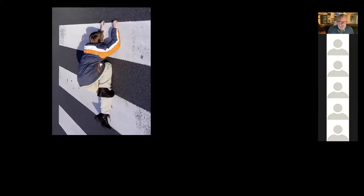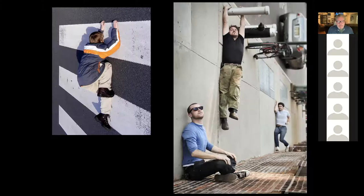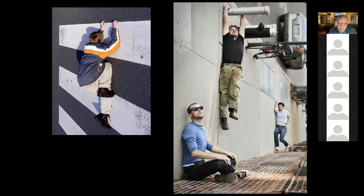Here's one where it looks like a kid is crawling up a wall when he's really not. A couple key points: if the person has long hair, this trick probably won't work because the hair isn't going to hang correctly — it will hang toward the street. In this photo they turned the camera sideways. The guy in the light blue shirt is laying on his back on the ground with his feet up, the guy in the black shirt is laying on his side hanging on to a pole, and the guy on the end makes it look like he's running.